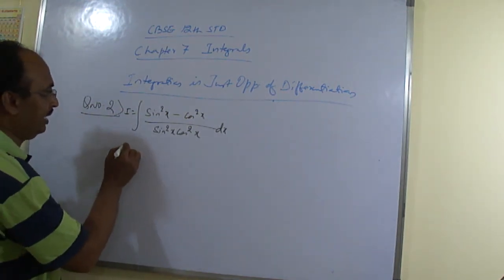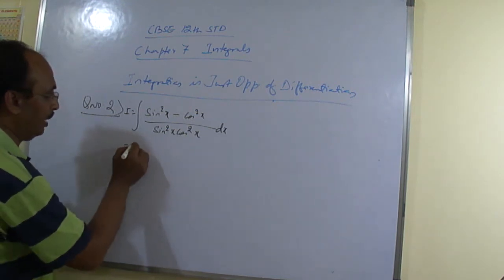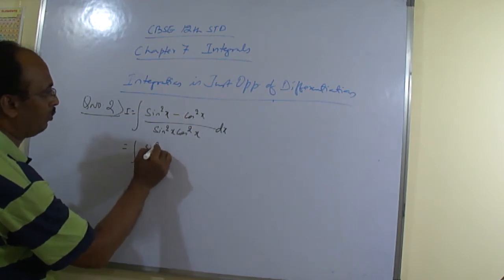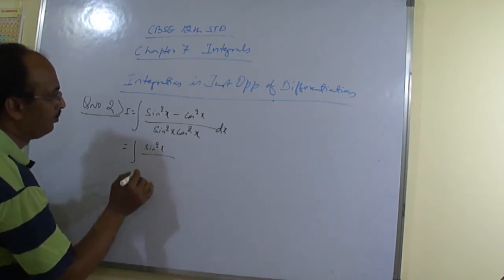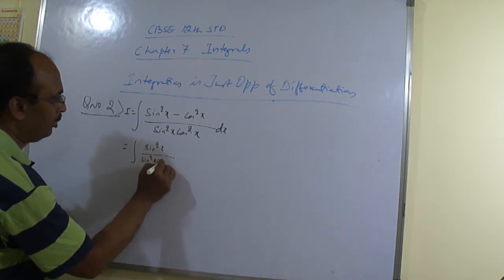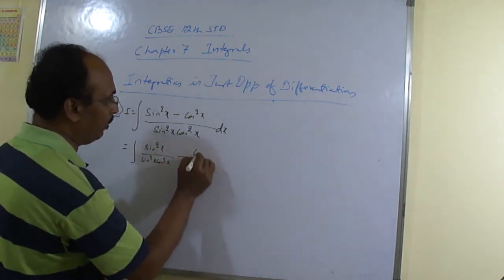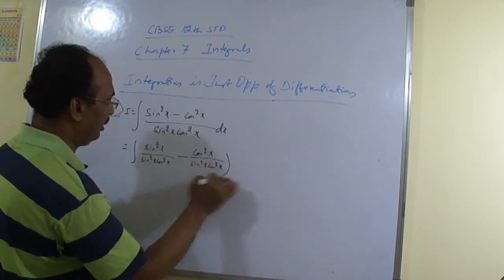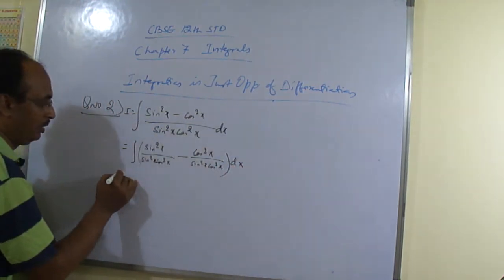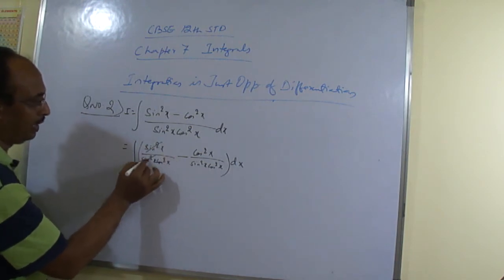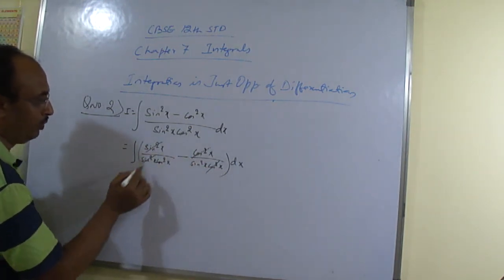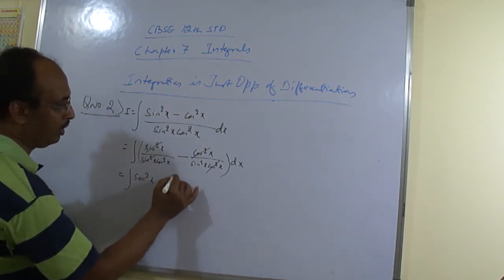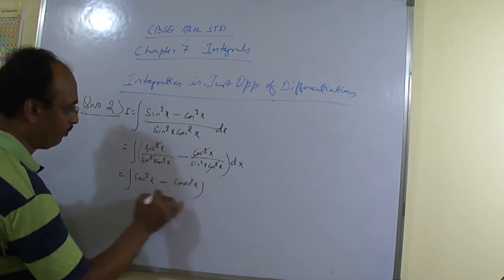In this case, we have to go the same way. We can split it as sin²x divided by (sin²x · cos²x) minus cos²x divided by (sin²x · cos²x). The sin²x terms cancel in the first part, and the cos²x terms cancel in the second part. Here you are getting sec²x, and here you are getting cos²x — yes or no? dx.